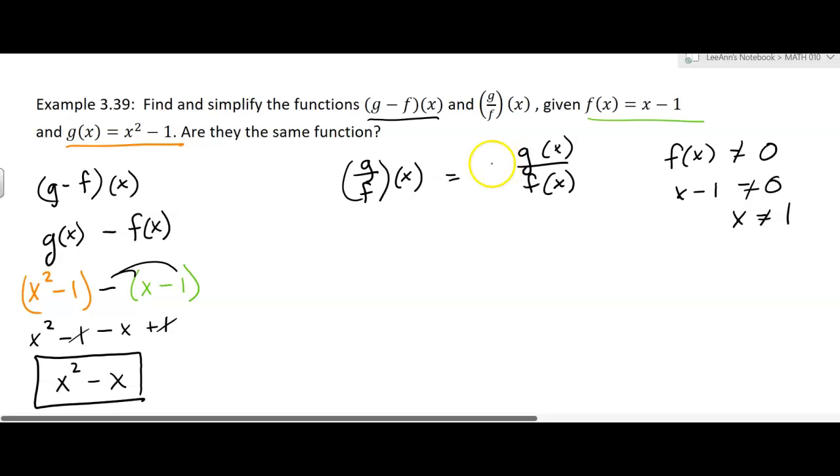Okay, so what is g of x? Well, we know that. We already have that underlined in orange. So that's going to be equal to x squared minus 1 over, and then we already have the f of x right there, x minus 1.